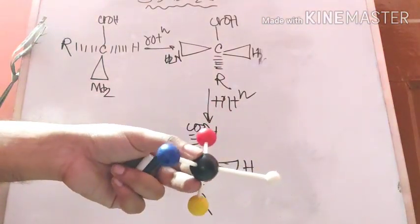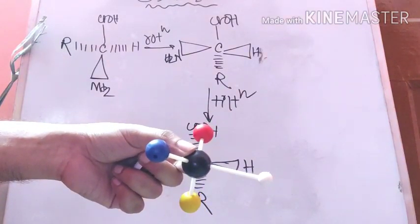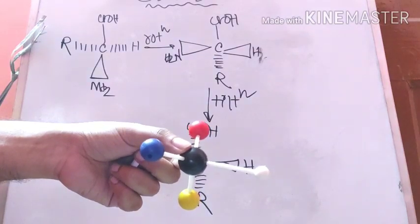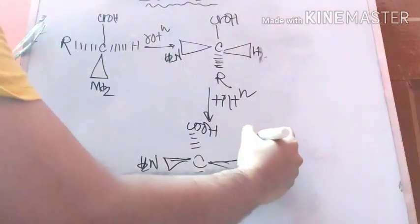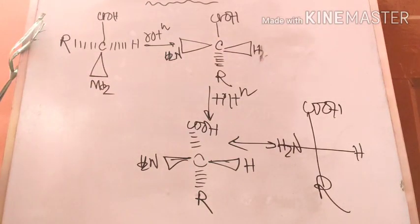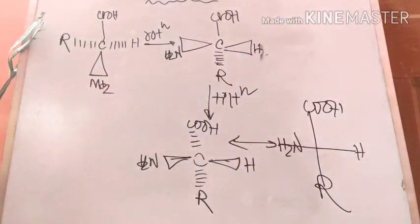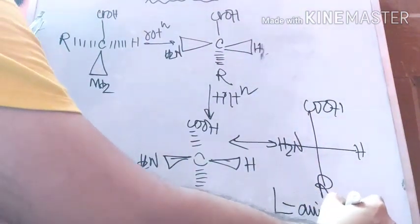Now think of this molecule as a two-dimensional one. Just write it as: COOH at the top, then H and NH2 on the sides, and R at the bottom — this is the Fischer projection of the amino acid. So from a 3D amino acid you can derive the two-dimensional structure, and remember this is the alpha amino acid as we discussed.